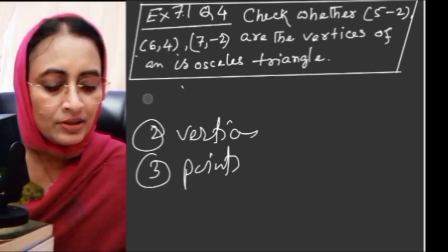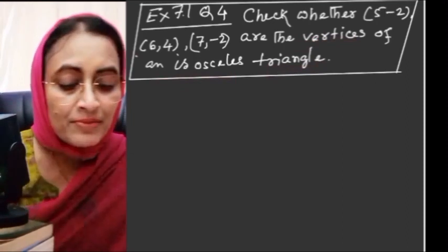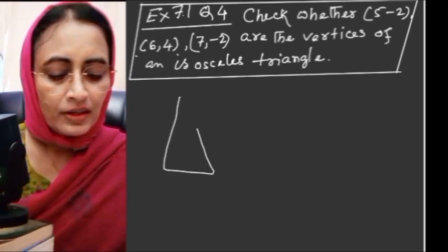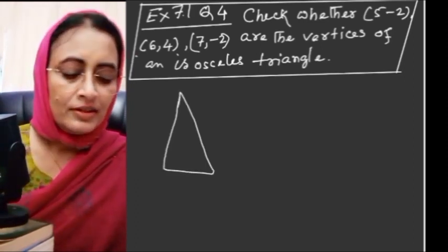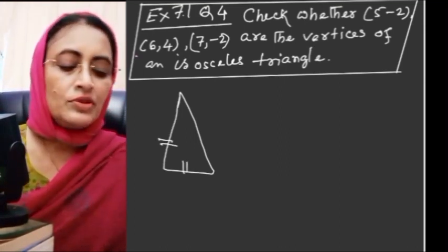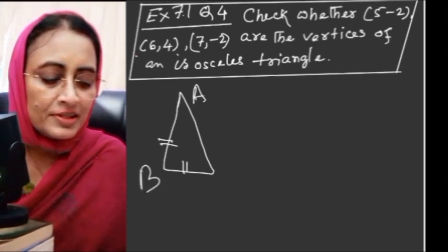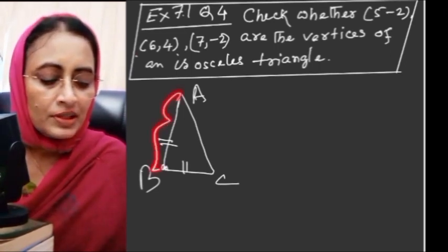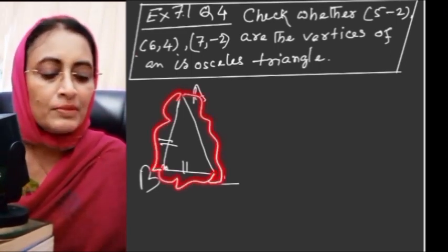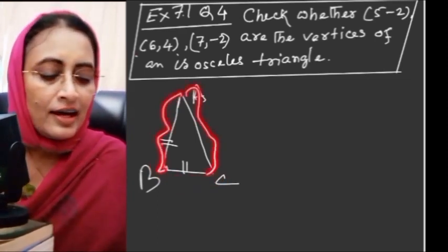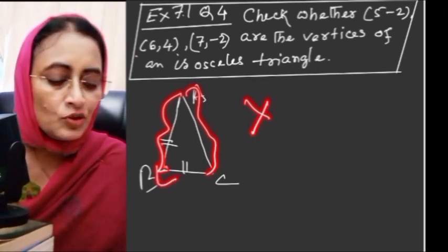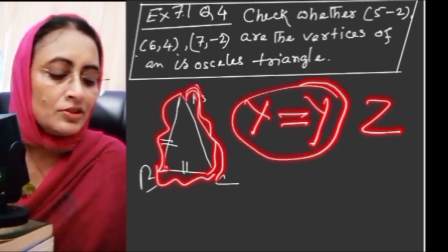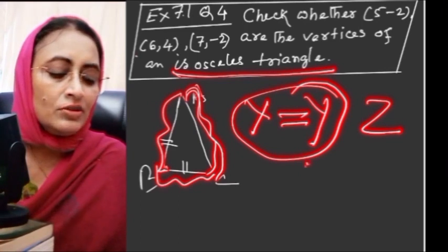We will put the distance formula to find whether it is an isosceles triangle. If we draw a triangle with these three points, we calculate the distances AB, BC, and CA. If any two of these distances are equal, the triangle is isosceles. If all three are different, it is scalene. If all three are equal, it is equilateral.